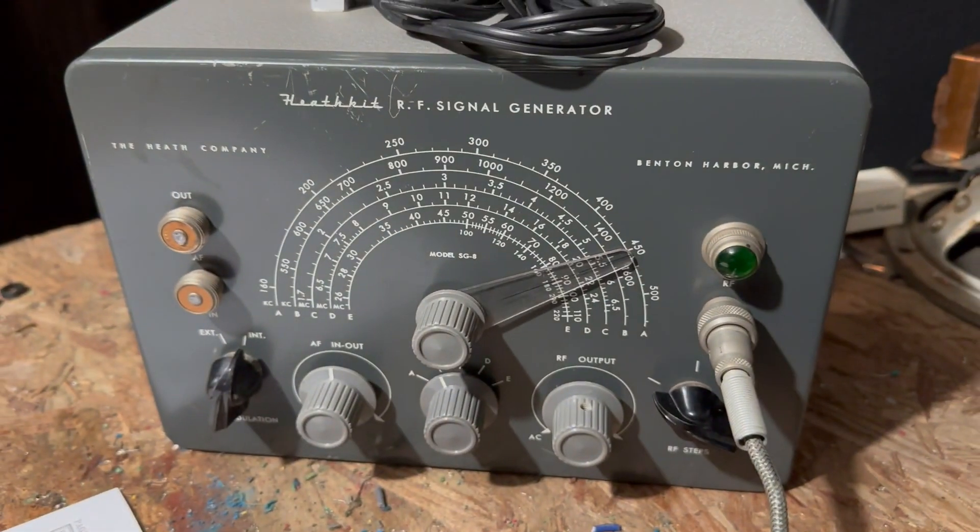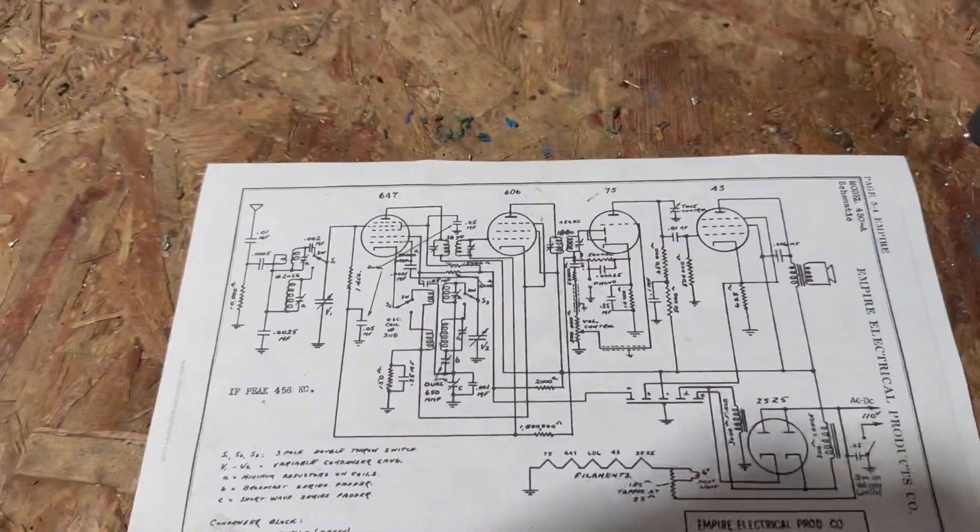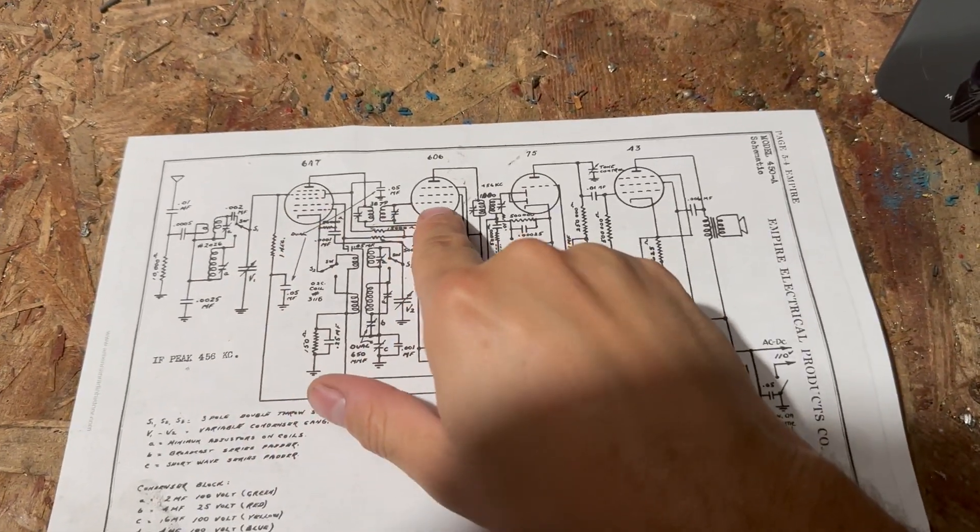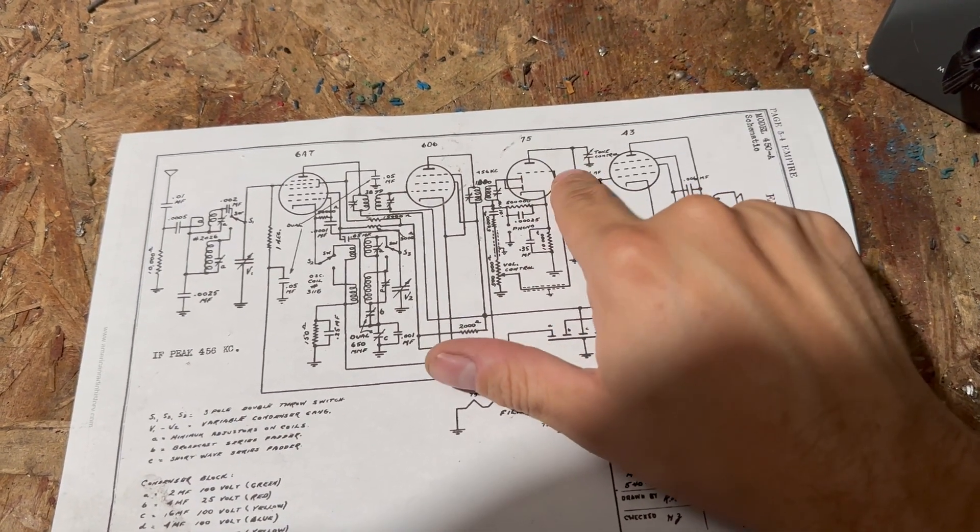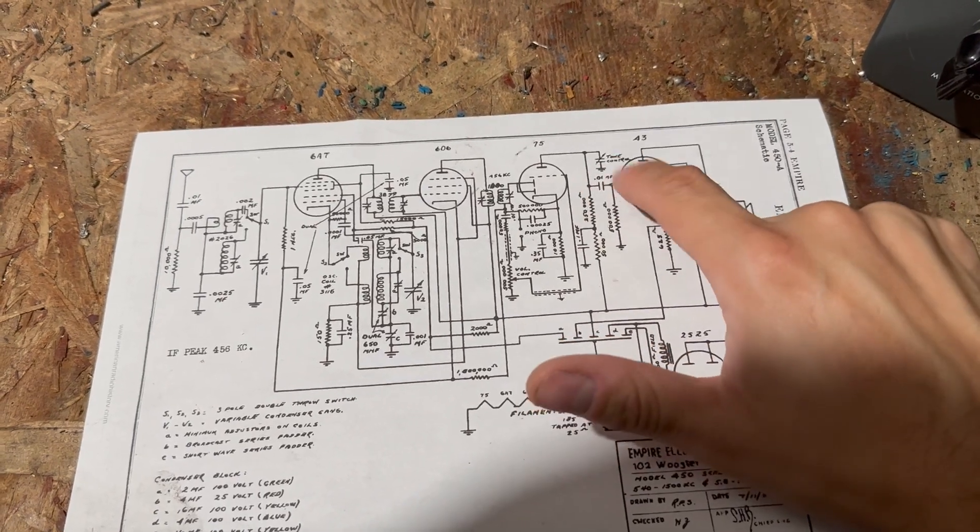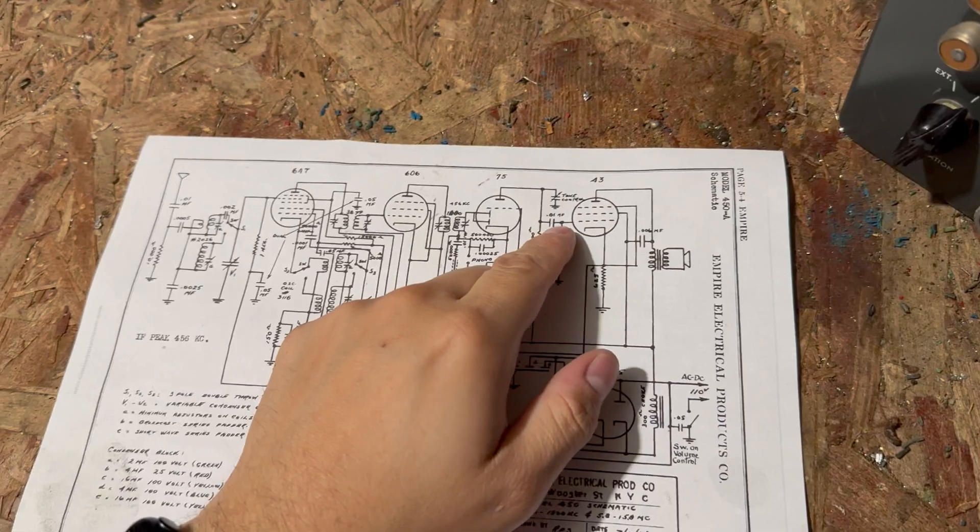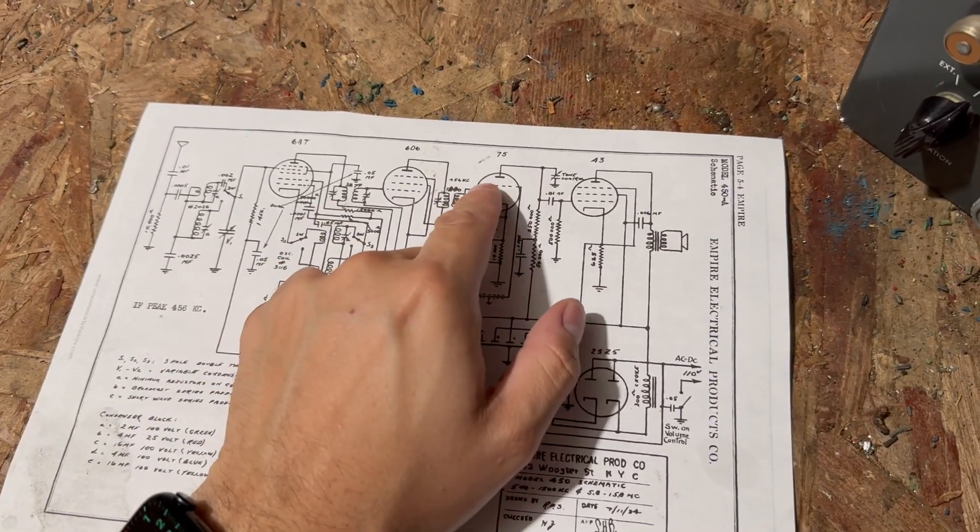By using this signal generator, you're injecting 455 anywhere. I mean, you can do it here, you can do it here on one of the grids, you can even do it here. Well, you can't really do it past this because that would then need to be an audio signal rather than an RF signal because it's already converted to audio by around this stage.